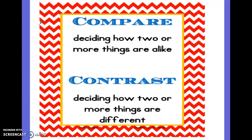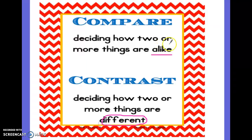This week our major comprehension skill that we're going to be working on is comparing and contrasting characters from the story. When we compare and contrast, we're talking about how two things are alike. When we contrast, we're talking about how two or more things are different. So when we compare we're talking about how they're alike, and when we contrast we're talking about how they are different. In this week's story we're going to be comparing and contrasting the characters.